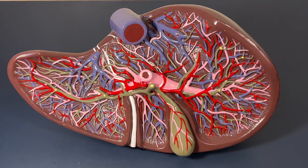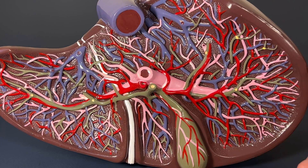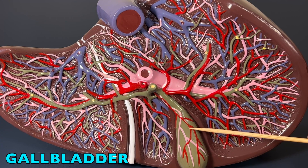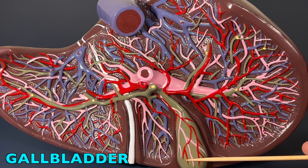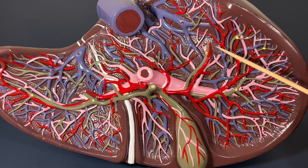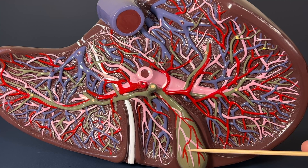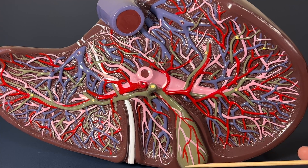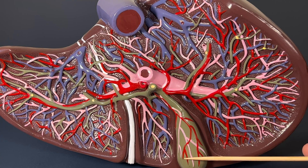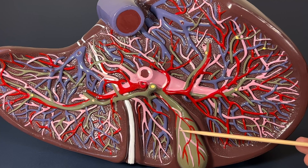Diving into the liver one more time, we are going to discuss the main structures that we see. This green sac is called the gallbladder, and the main responsibility of the gallbladder is to store bile. The liver produces bile, and it is stored in the gallbladder. A common misconception is that the gallbladder is what produces bile, but that is incorrect. You must remember that the liver produces bile, and it is stored in the gallbladder.